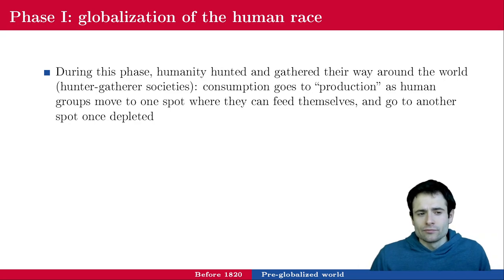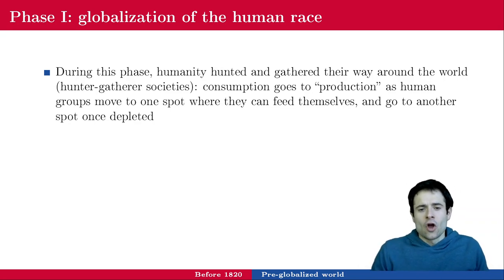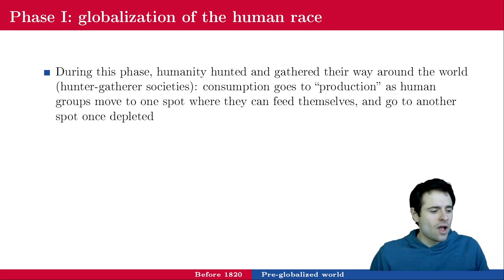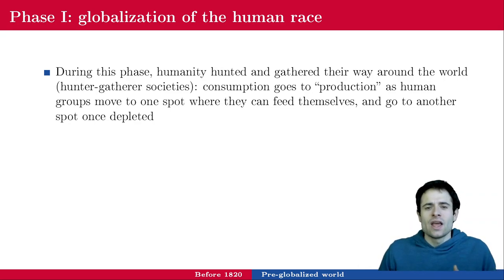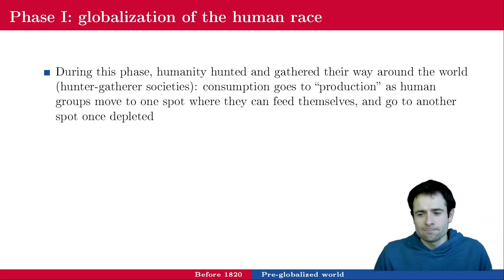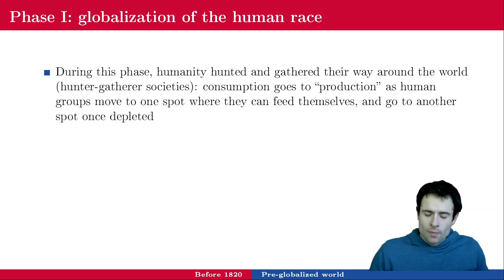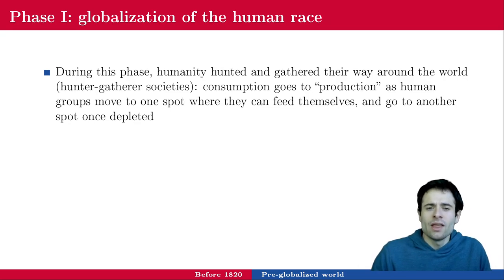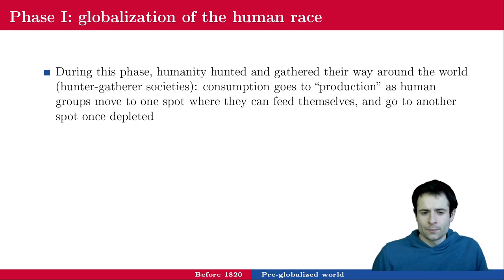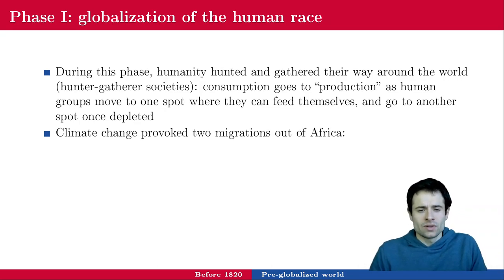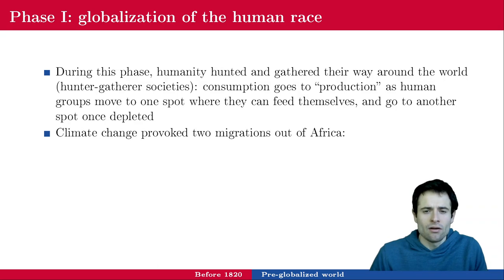Phase one is just about the globalization of the human race. Humanity is made of hunter-gatherers. They hunt animals and eat them pretty much on the spot. They have no tools and no technology to keep meat any longer than probably a couple of days. Consumption goes to production — humanity goes where there is enough food to live. Once the resources are depleted, they move to another spot. Tools were pretty rare; humanity knew how to make fires, and they probably had tools to build a couple of weapons.